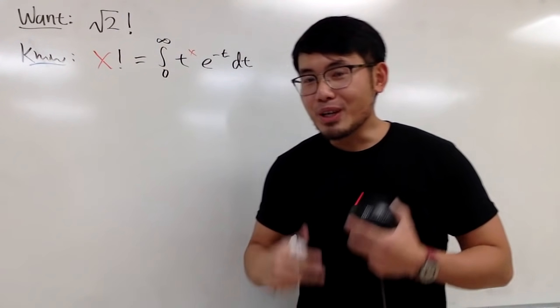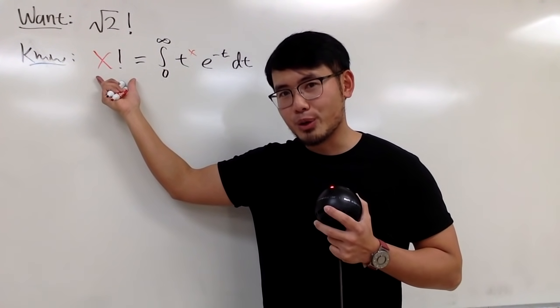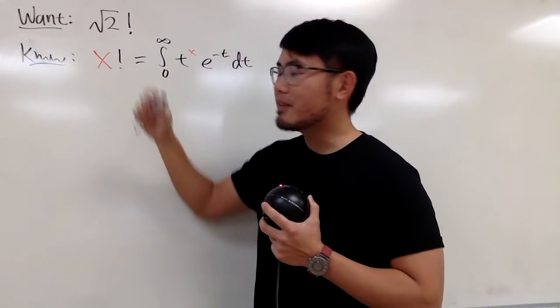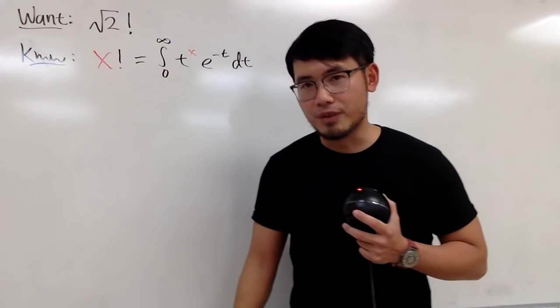And with this right here, you can do a lot more with factorials. We can talk about 1 half factorial, you can talk about negative 1 half factorial, you can talk about pi factorial, you can talk about e factorial. Of course, we can also talk about square root of 2 factorial.